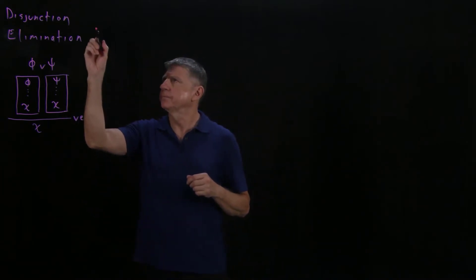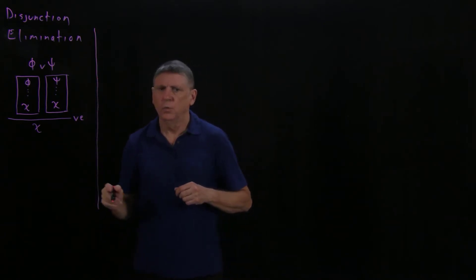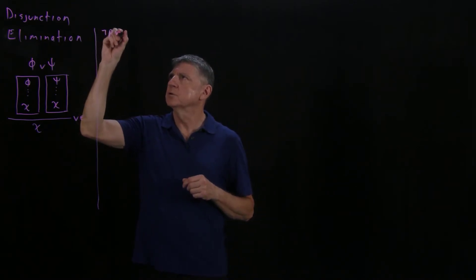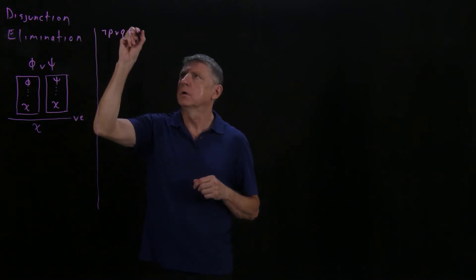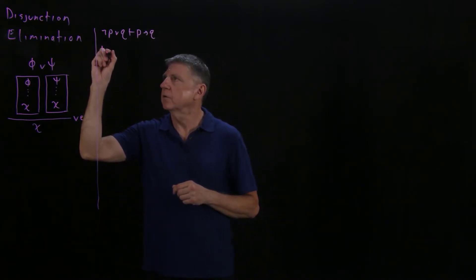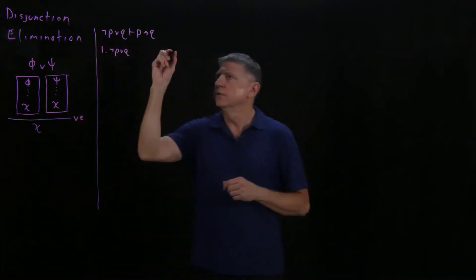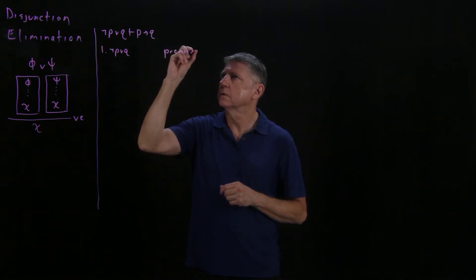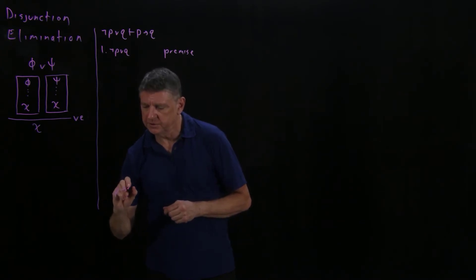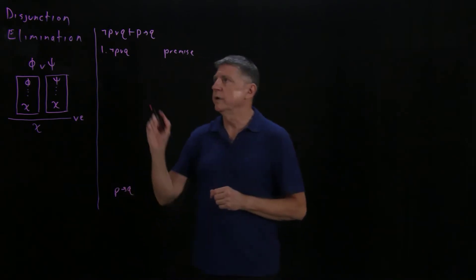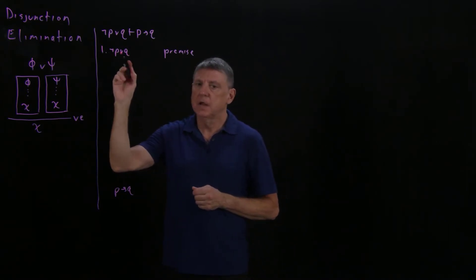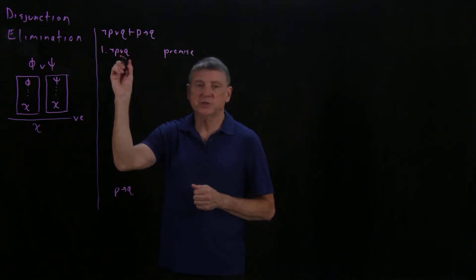Let's try a couple of examples. Let's begin with a sequent: either P is false or Q is true, therefore P implies Q. We begin by writing down our premise, which is ¬P ∨ Q, because it is a premise. We write the conclusion, which is P → Q. And then we examine our premise — the form of this is a disjunction, so we could apply disjunction elimination.